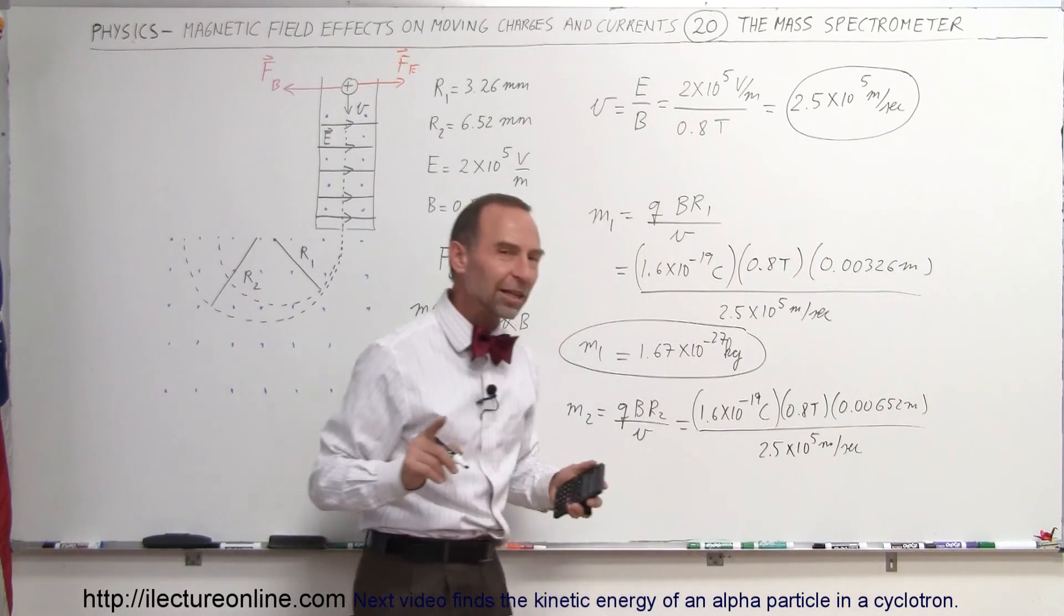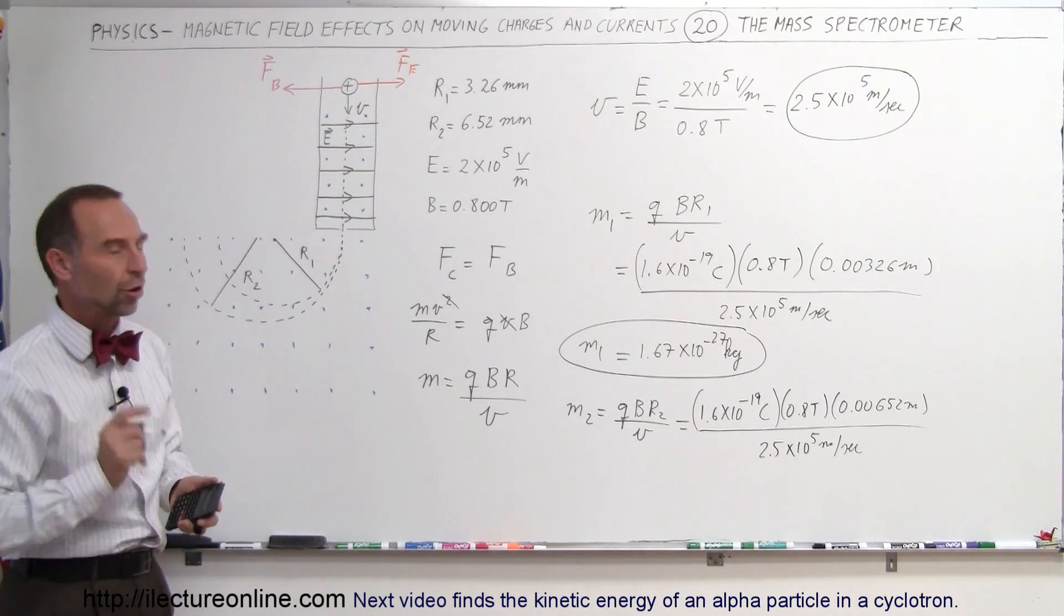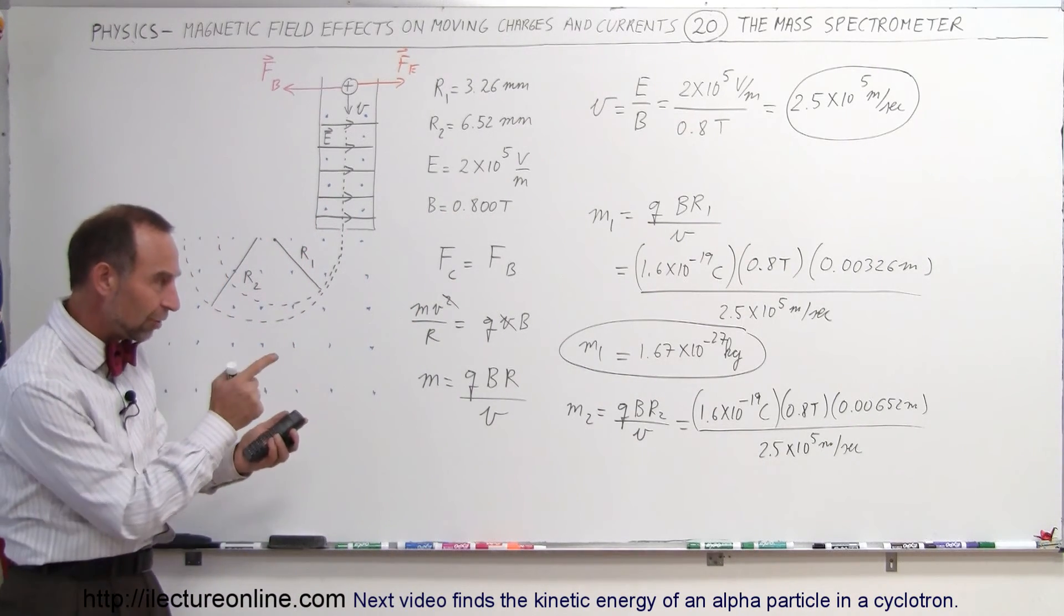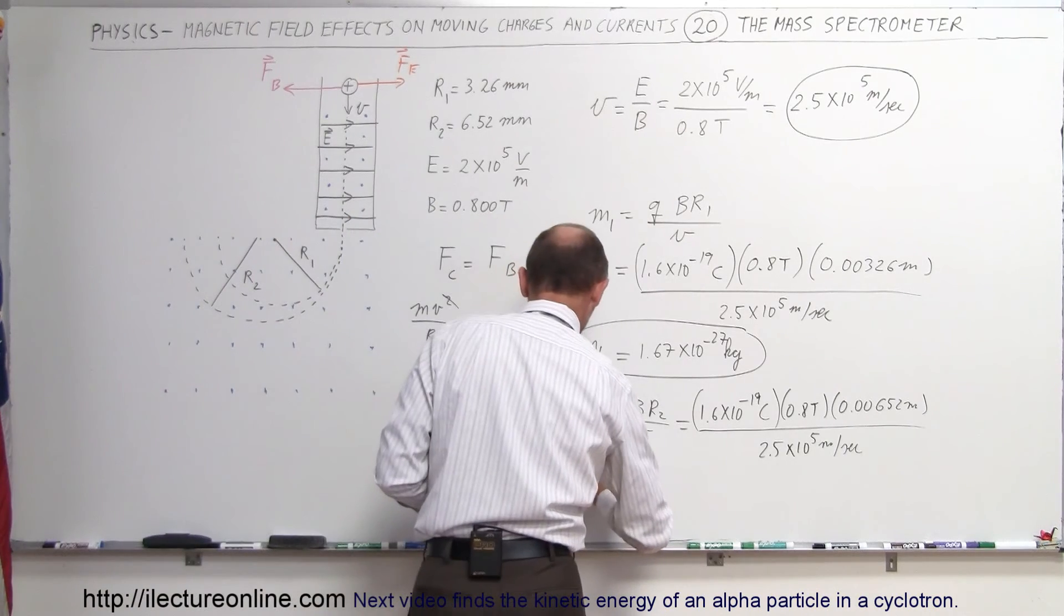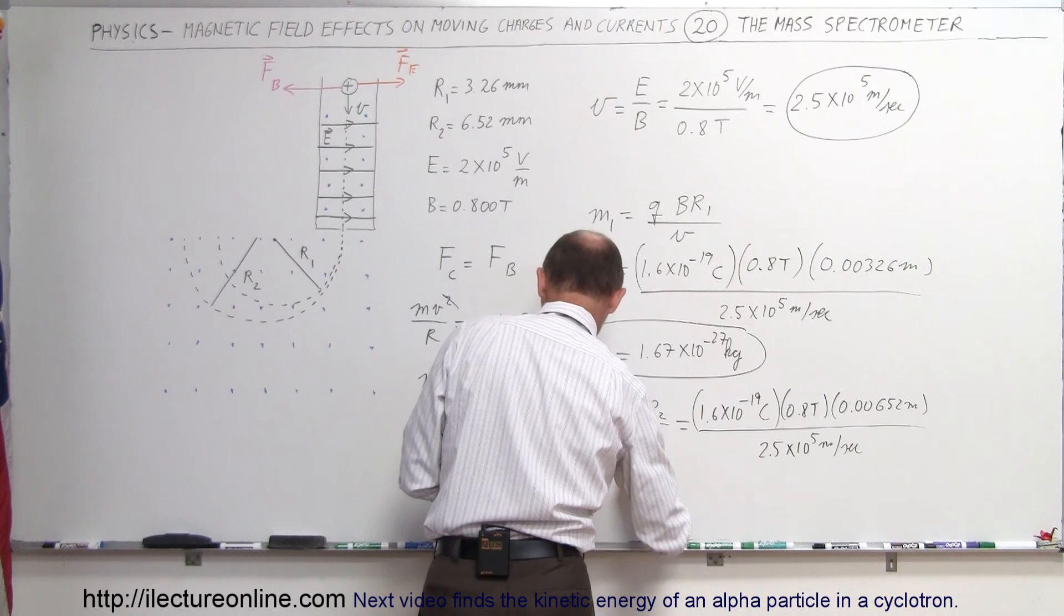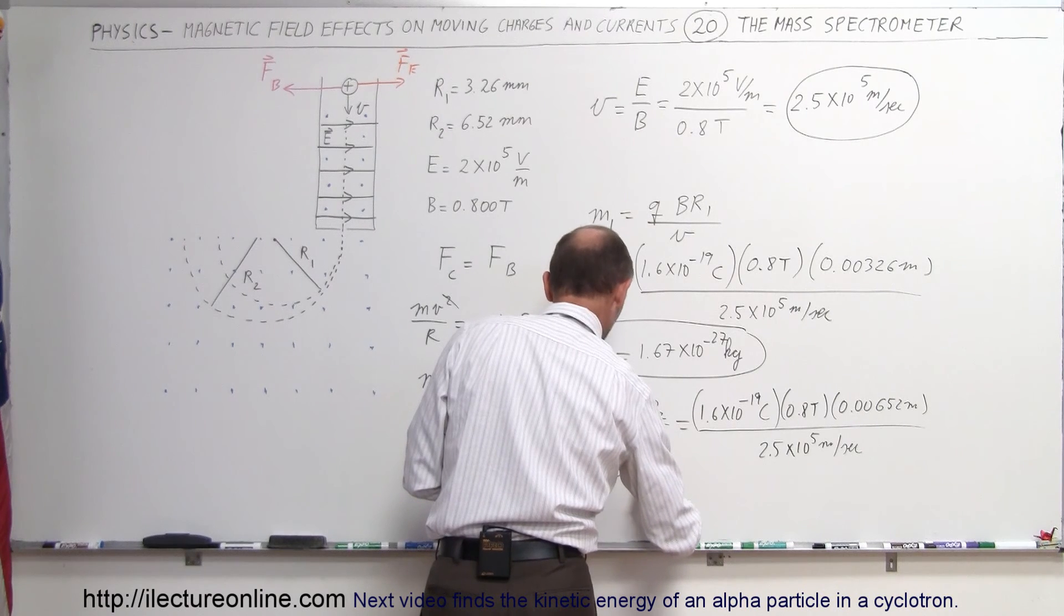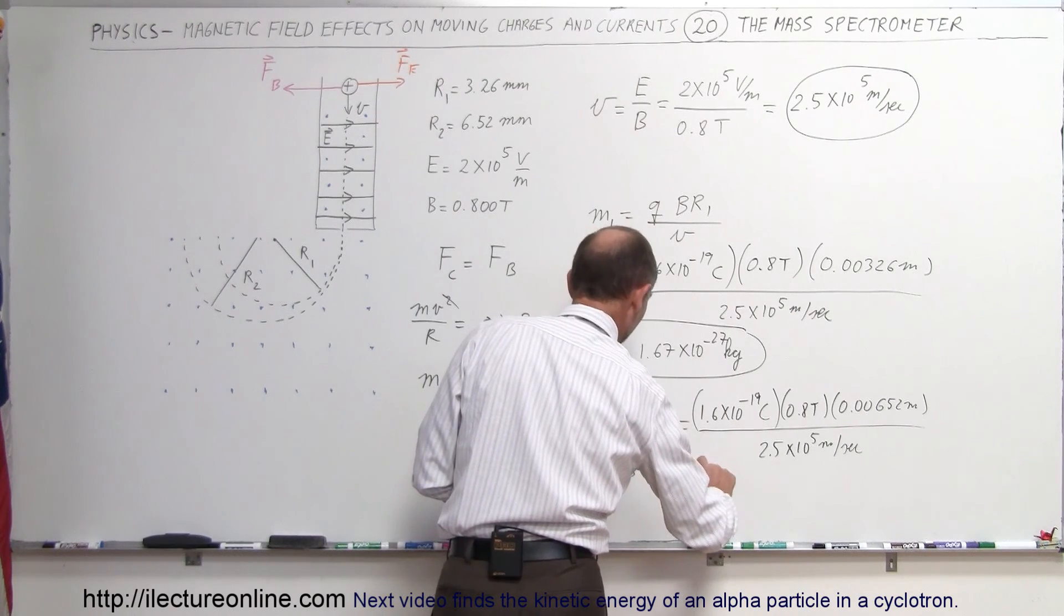Notice that the velocity selector is not affected by the mass of the particles, only by the charge on the particles. So notice that's twice the radius, so times 2. That means we get mass 2 equal to 3.34 times 10 to the minus 27 kilograms.